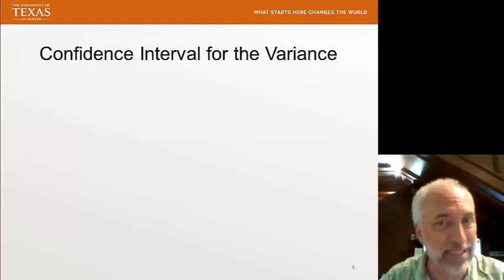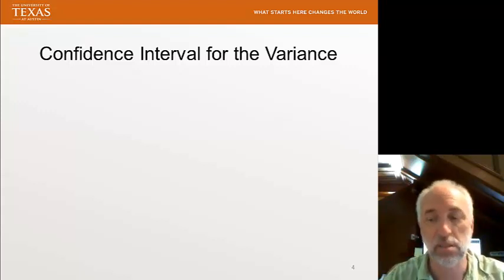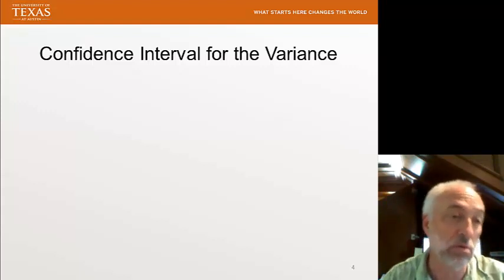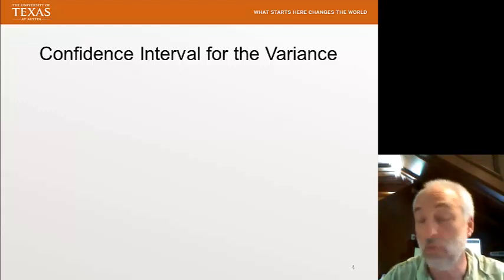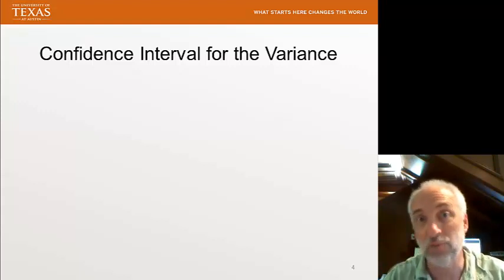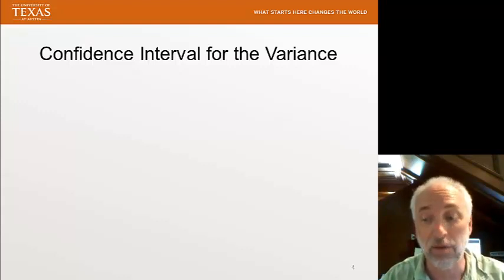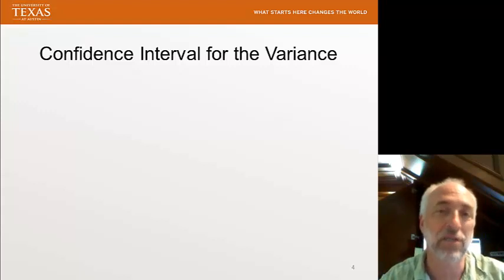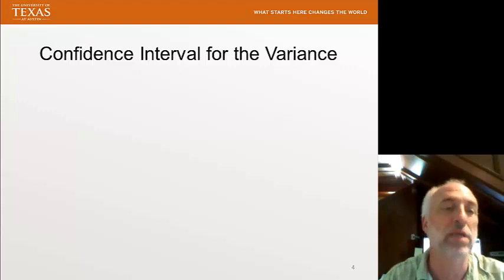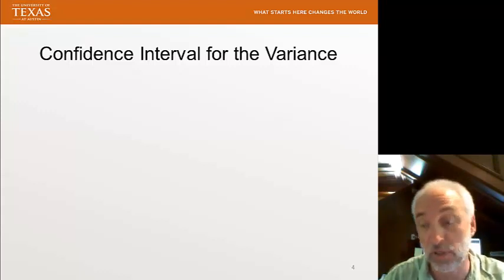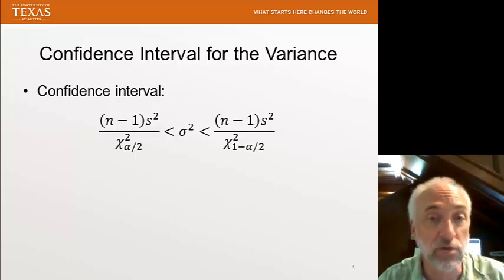So, how do we construct a confidence interval for the variance? Unfortunately, this is rarely done. Students who have to collect experimental data and write up a lab report or write up a thesis rarely do this. But scientists and engineers who write technical papers that they publish in technical journals often also rarely do this calculation. And they should. Everyone should. Everyone should calculate the confidence interval for a variance if you're reporting the variance as an output of your experiment. So, what's the confidence interval for a variance?